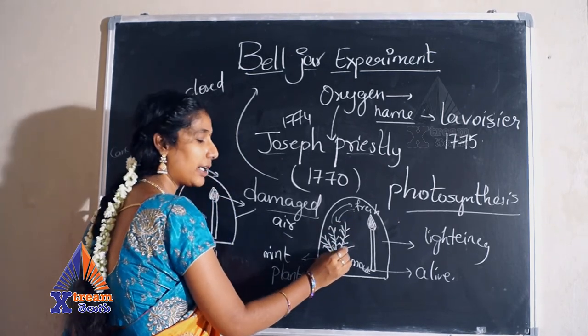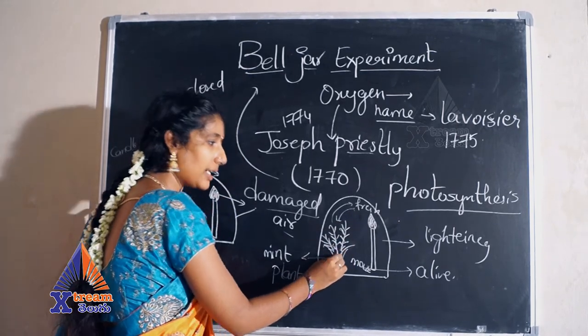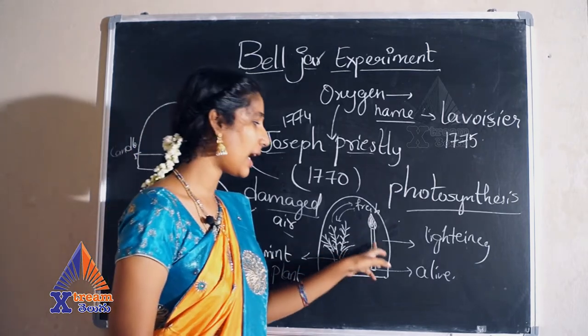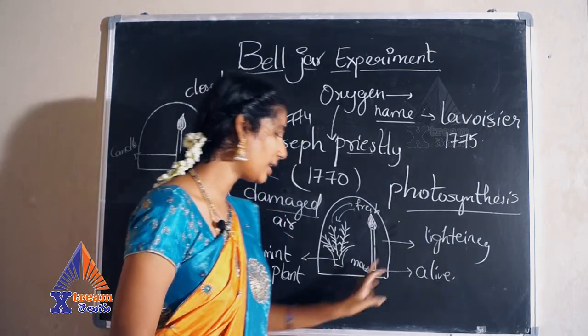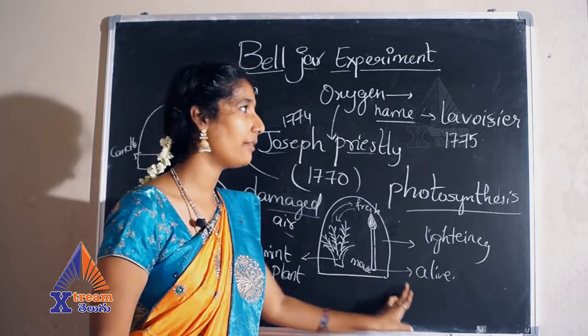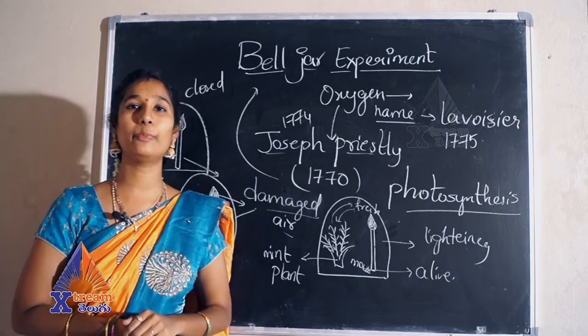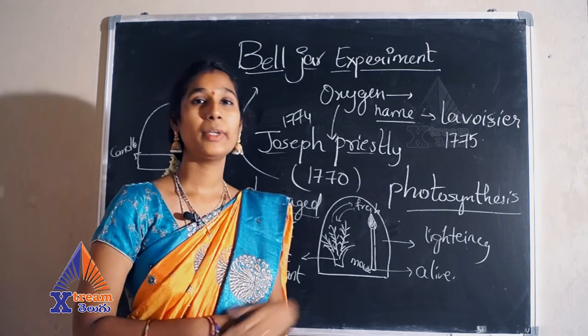The mint plant or any other plant, with the help of heat and light, helps replace the damaged air — the candle lights again and the mouse is alive. This is the Bell Jar experiment done by Joseph Priestley.